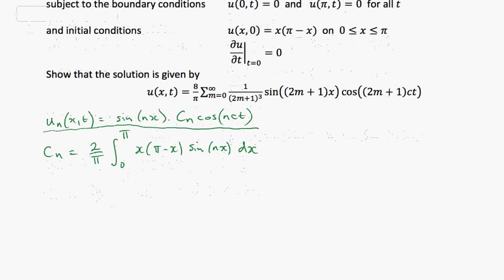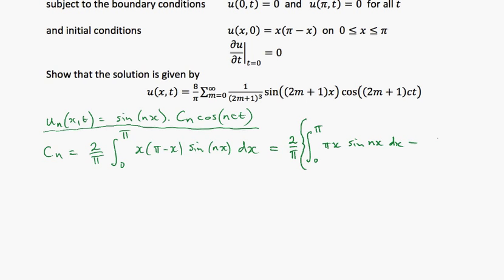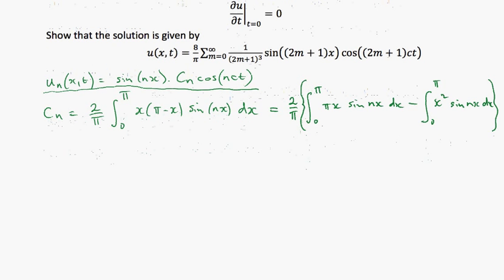Now, how I would normally do this integral — this is the bit everybody doesn't like. I'm going to do (2/π) times the integral from 0 to π, and I'm going to split it into two brackets: π times x·sin(nx) dx, minus the integral of x²·sin(nx) dx. I'm splitting it into two parts and doing each separately, not worrying about the 2/π factor until the end. The first one: integral from 0 to π of π·x·sin(nx) dx — I can take the π outside.